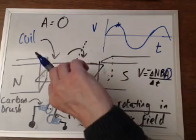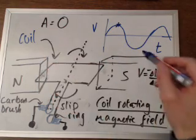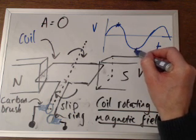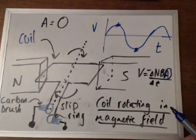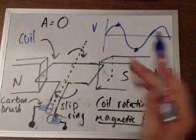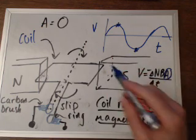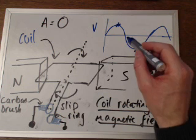When it's flipped through 180 degrees, you will get a maximum, but in a negative direction. And when you've got the maximum area facing it, in fact,